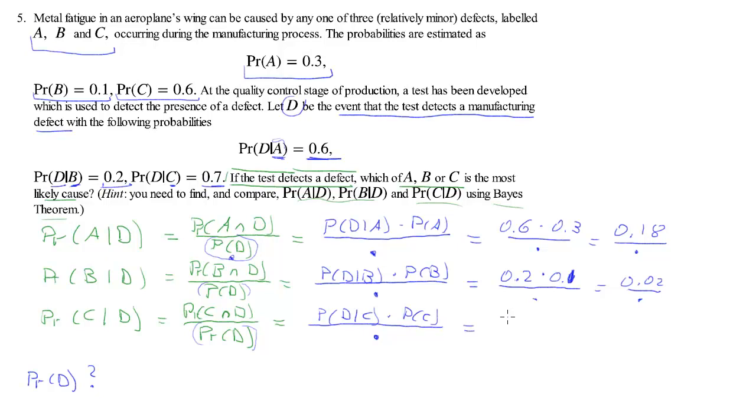And lastly, probability of D conditional on C is 0.7. So this defect is easiest to detect, 70% detection rate. And the marginal probability of C is 0.6, so here we get 0.42 divided by the marginal of D.